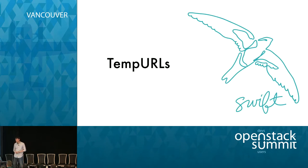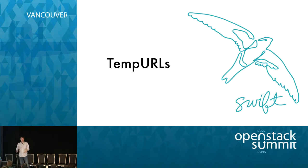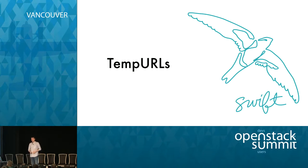Next cool feature: Tempurls — one of my favorites. You can set a special piece of metadata on an account called a temporal key, which is a secret key. With that key, you can generate a signed URL that puts some parameters on the end of a request. Anybody with that URL is able to access the data — it's an HMAC SHA-1 of your secret plus parameters associated with the request.